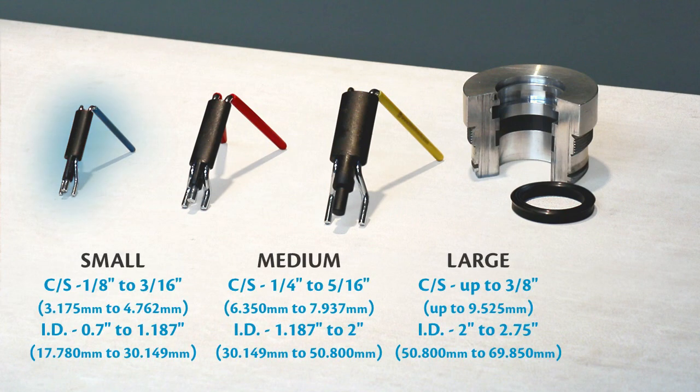The small installation tool is suited for cross sections between 1/8 and 3/16 and an ID of 0.7 to 1.187. The medium installation tool is suited for cross sections between 1/4 inch and 5/16ths and an ID of 1.187 to 2 inches.